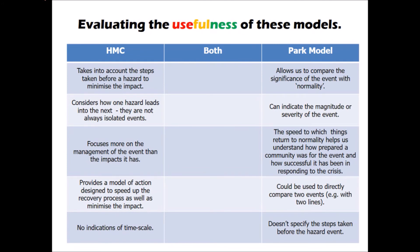The PARC model, on the other hand, might allow us to compare the significance of an event with normality because we have a relative scale on the y-axis. Therefore, it can help indicate the magnitude or severity of an event — the steeper and lower the dip within the PARC model curve suggests a more severe event. It can also give an indication of how long it has taken for a place to get back to normal: the speed at which the curve dips back up to normality indicates whether it's a quick or slow recovery. We could even compare events by plotting two lines — one for each event.